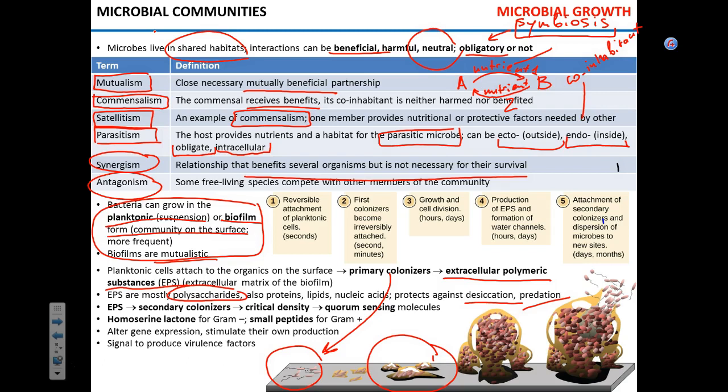EPS is like a sticky goo that facilitates adhesion of secondary colonizers, contributing to biofilm growth. Like any community, biofilm cannot grow to unlimited size — every location has physical limits. When cells in the biofilm reach a critical density and literally begin physically contacting each other, they start to produce so-called quorum sensing molecules.